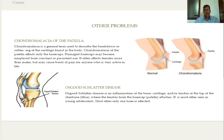Osgood-Schlatter disease is a condition added for completeness. It most commonly occurs in the younger age group and involves inflammation of the bone, cartilage, or tendon at the top of the shin bone where the tendon from the kneecap attaches. It is most often seen in young adolescents, and most commonly only one knee is affected.